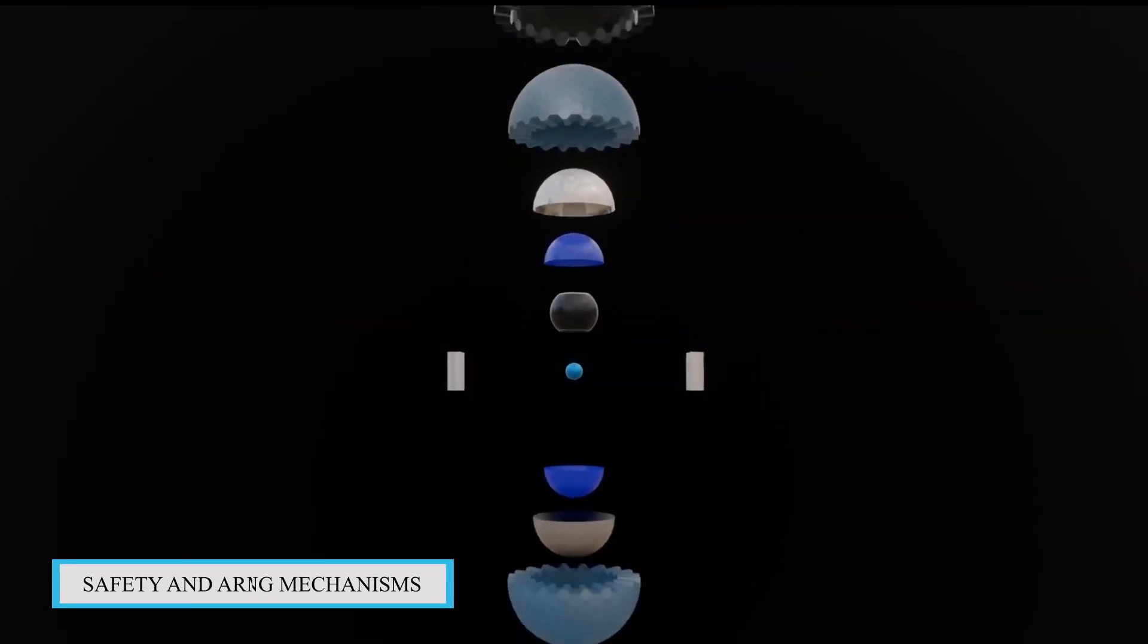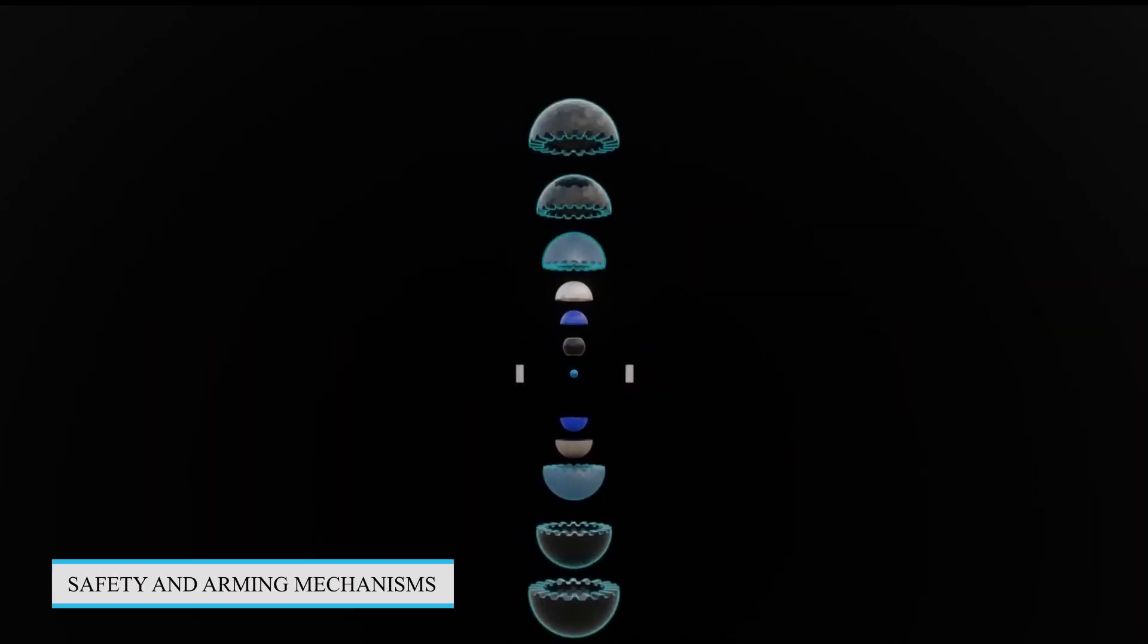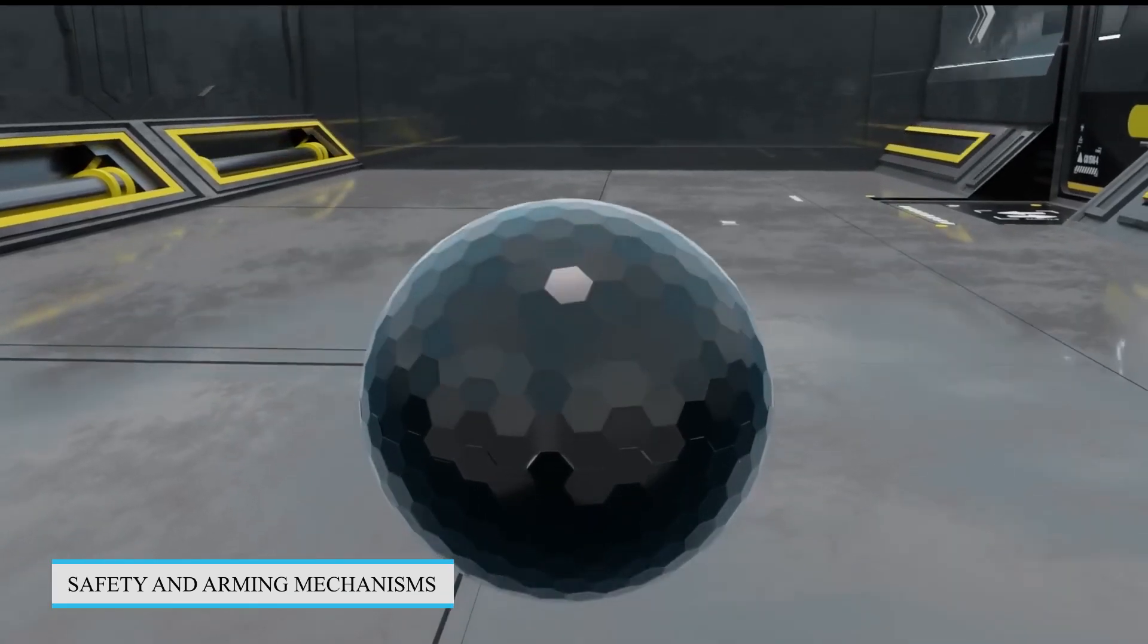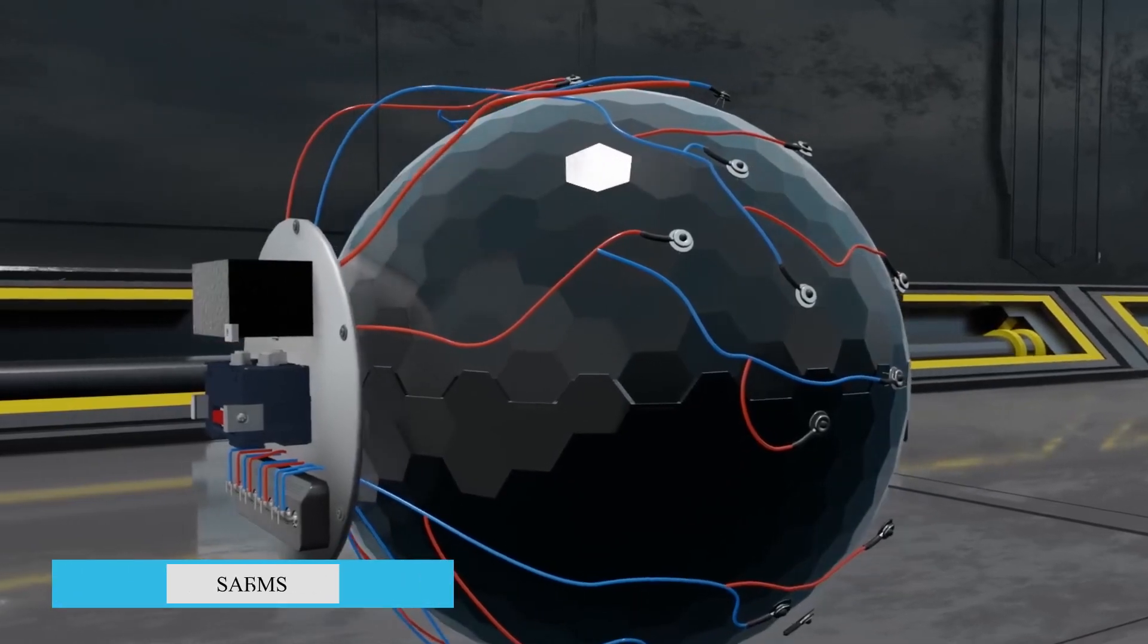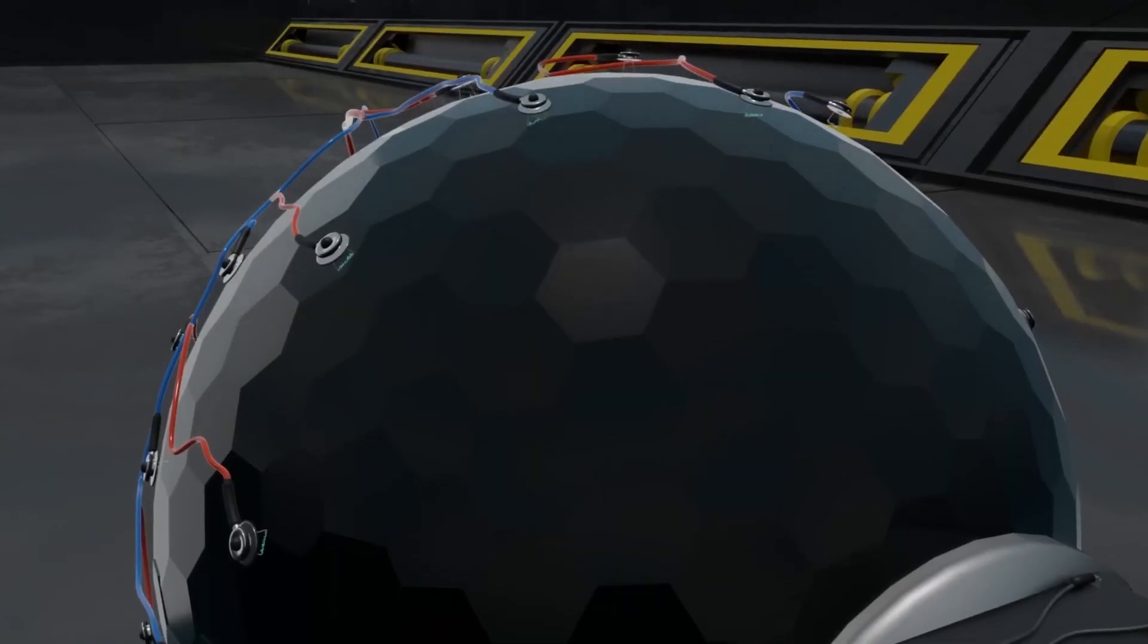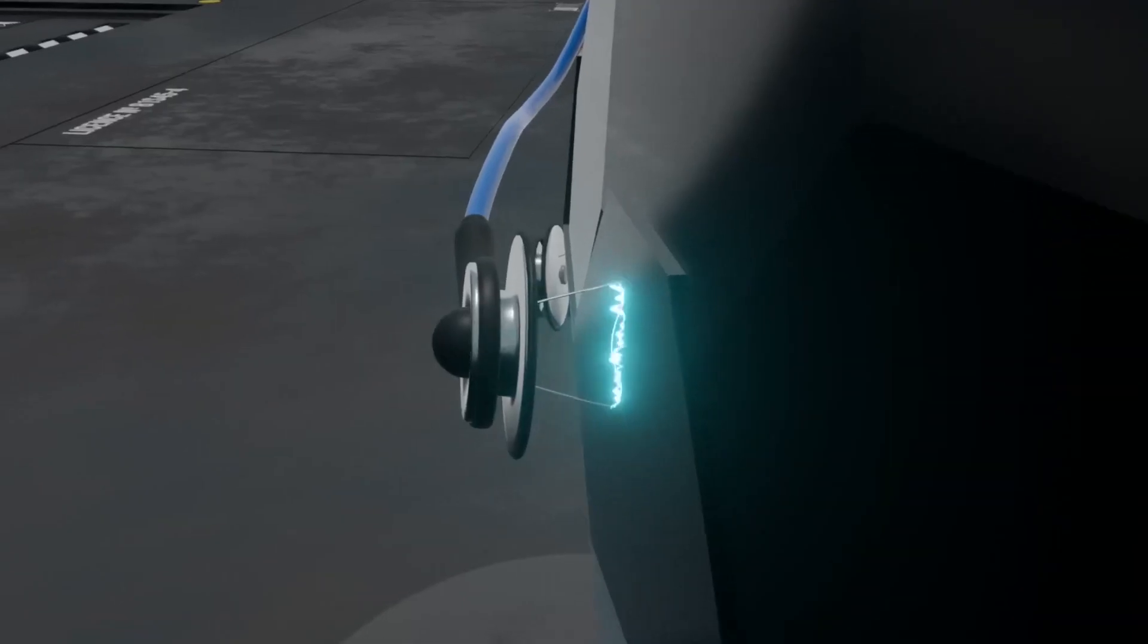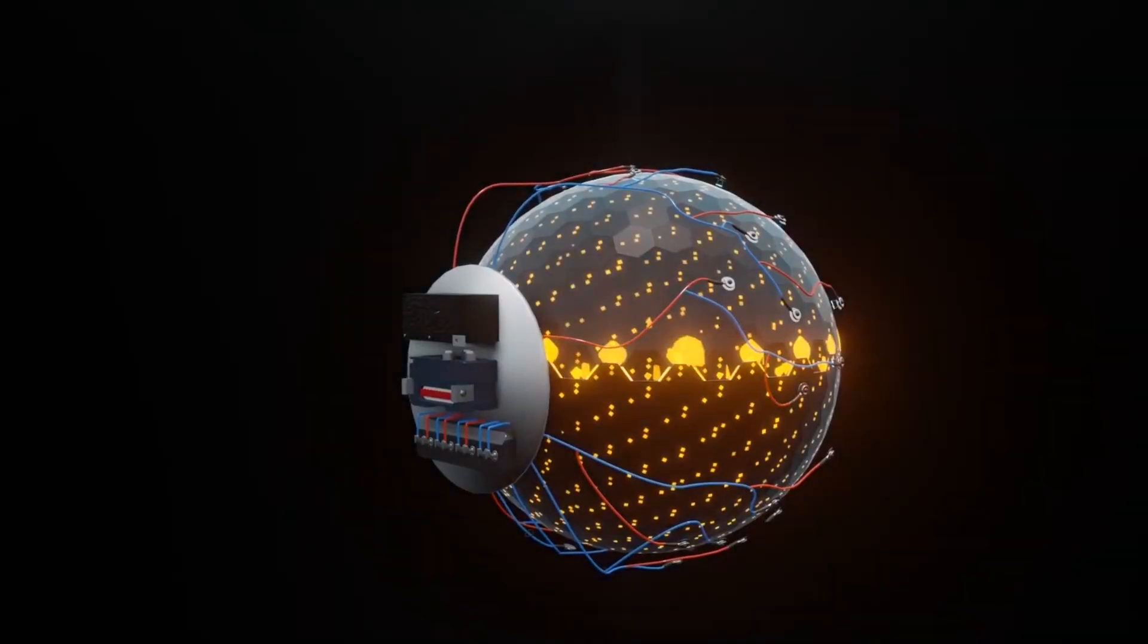Eight, safety and arming mechanisms. Nuclear weapons typically incorporate complex safety and arming mechanisms to prevent accidental detonation. These mechanisms ensure that the bomb can only be detonated under specific conditions and by authorized personnel.